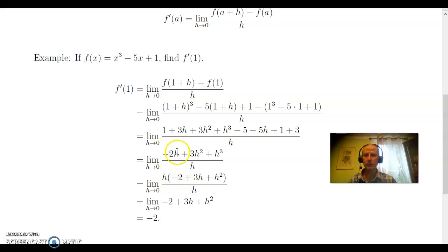Now we can factor an h out of every term in the top and get the limit as h goes to 0 of h times the quantity of minus 2 plus 3h plus h squared all over h. When you cancel away those h's, we just get the limit as h goes to 0 of minus 2 plus 3h plus h squared. At this point, when you plug in 0 for h, nothing goes wrong. We're no longer getting 0 in the bottom of a fraction when we plug in 0 for h, so we just plug in 0 for h to get the answer, which turns out to be minus 2.